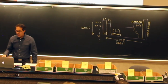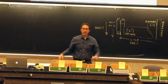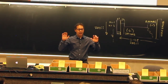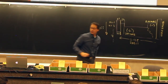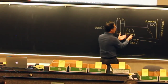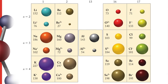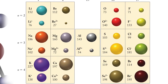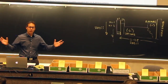A student once taught me a way to remember cations from anions: cats have paws — positive. So cations are positive, anions are negative. As we gain or lose electrons, we change the size of our atoms. If we lose electrons — cations — our atoms get smaller. If we gain electrons — anions — our atoms get bigger. It's like our solar system: add more planets, it gets bigger; remove planets, it gets smaller.